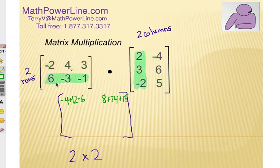Now look at this row compared to that first column again. So 6 times 2, that'll be 12. Negative 3 times positive 3 is negative 9. And negative 1 times negative 2 is positive 2. That will give us our element right there.